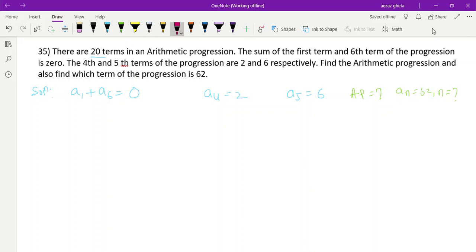Here, a₁ is nothing but a, and a₆ is a plus 5d. So a plus a will get 2a plus 5d equals 0. This is equation 1. We can write a₄ as a plus 3d equals 2.